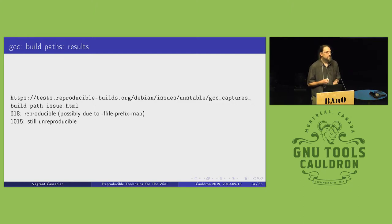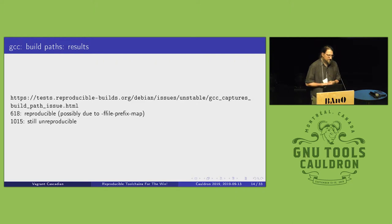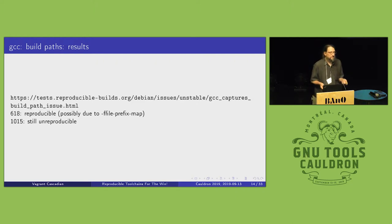Some toolchains — Qt toolchains in particular, and possibly CMake in general — embed the build flags. So we still ended up with roughly a thousand packages in Debian that are unreproducible because of this.